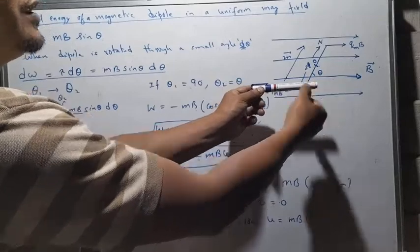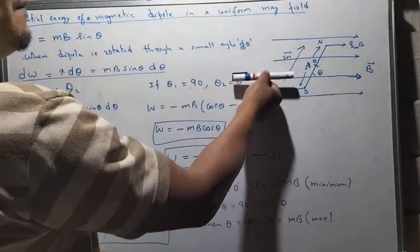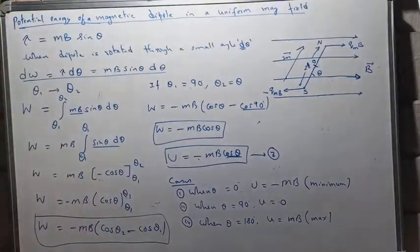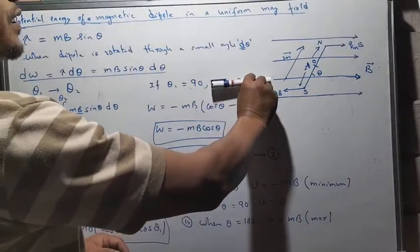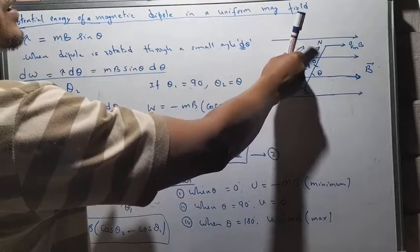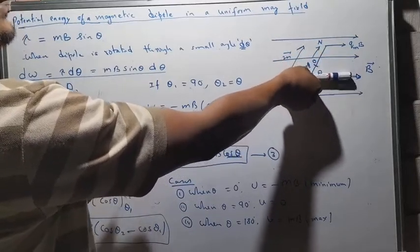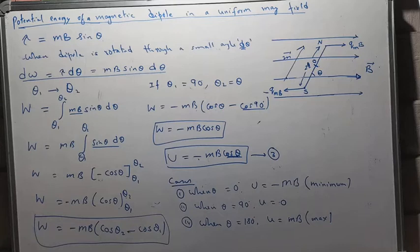When the dipole is anti-parallel to the magnetic field (θ = 180°), the potential energy is maximum. Since it has maximum energy, the dipole will try to rotate and keeps rotating until it becomes parallel to the field, where it becomes stable. This is analogous to what we discussed for an electric dipole in a uniform electric field in electrostatics — everything follows the same principles.